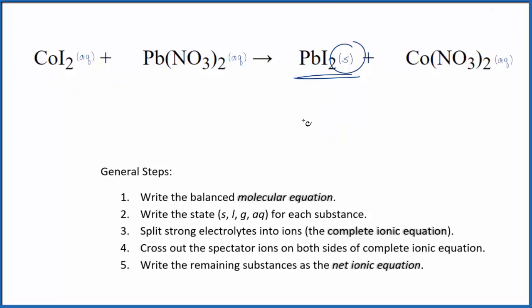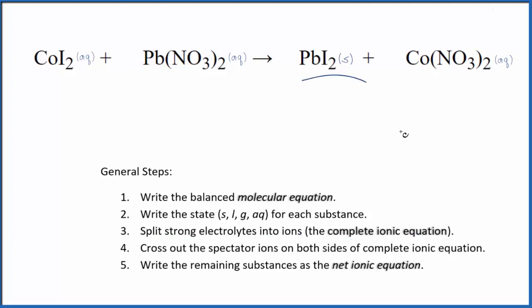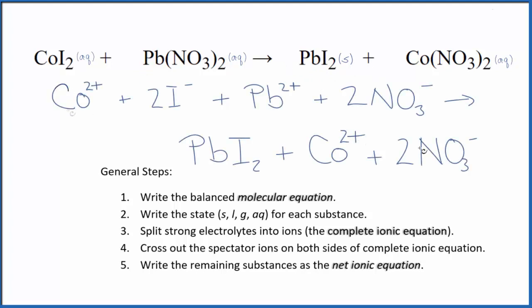So we have our states. The next step is to split all of the strong electrolytes into ions. That'll give us the complete ionic equation. Note that we don't split solids apart when we're writing the complete ionic equation. So the lead-2 iodide is going to stay together. So that'll look like this — this is the complete ionic equation, and note we didn't split that lead-2 iodide apart since it's a solid.